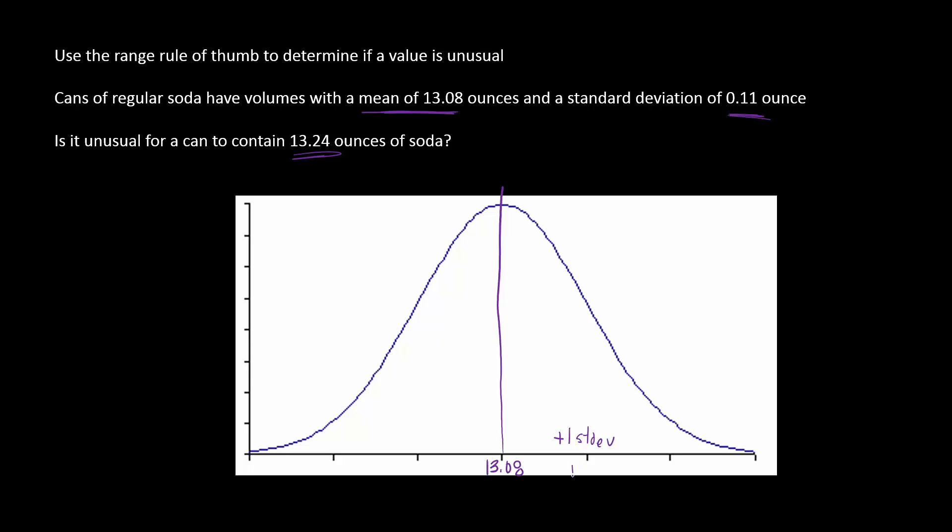To get 13.19, and then if I'm below the mean I would subtract, so this is minus one standard deviation and I'd get 12.97 when I take 13.08 and subtract 0.11.